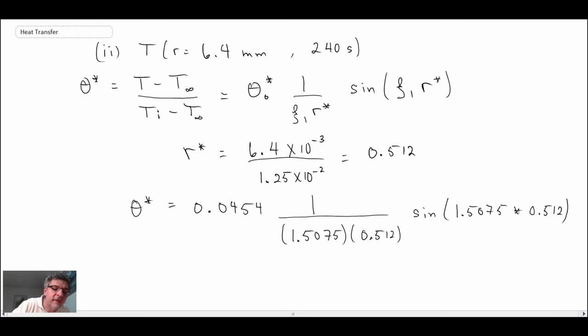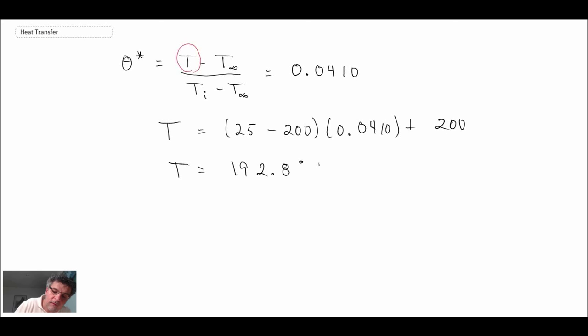It's at this point that if you're sleepwalking while doing this solution, you're going to make a mistake. The reason is this needs to be in radians. Remember when you do solutions to engineering problems, be awake, don't sleepwalk your way through them. Convert your calculator to radians, plug in those values, and we get θ* = 0.0410. Then we can evaluate the temperature at the radial location we're interested in. We got T = 192.8°C.